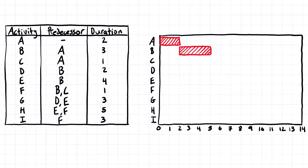The same is going to be for activity C. It can't start until A is done, so again we find where A finishes, which is at the end of the second day, and then activity C is going to pick up at that same point, which is also the beginning of the third day, and this one is just one day long.